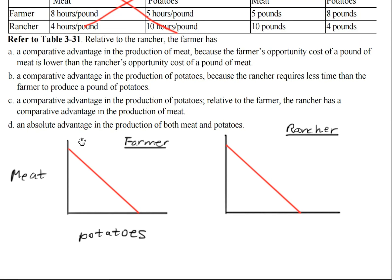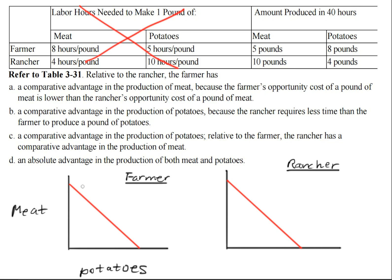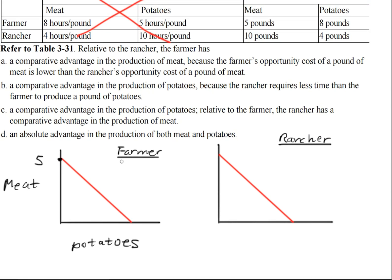On the y-axis, we have the units of meat that each can produce. So the maximum number of units that the farmer can produce will be 5 pounds of meat. For the potatoes, the maximum number of pounds this farmer can produce would be 8.